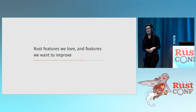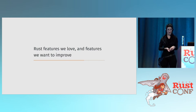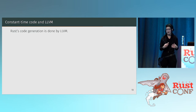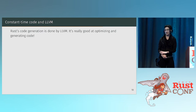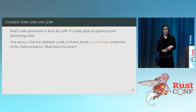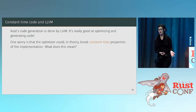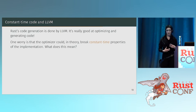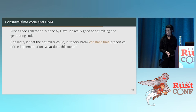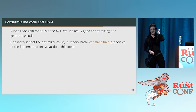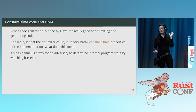Now for some things about Rust we really like and some we think could be better. Rust's code generation is done by LLVM, and as shown, it's really good — not just at generating fast code but at generating safe code. Historically there's been a worry that an optimizer could break the constant-time properties of an implementation. People have said you can't use compilers to write cryptography and must use handwritten assembly. That's not entirely true, though there are chipsets that do weird things.